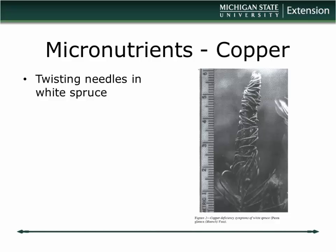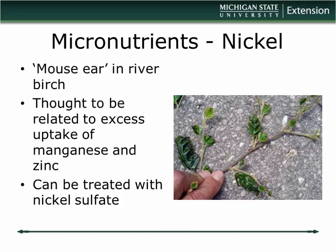Nickel has recently been identified as an essential element — when I was in college there were 16, now there are 17. A deficiency that can occur is in river birch — John Ruter at the University of Georgia did the work on this. He showed that river birch developing mouse ear symptoms — really small, crinkled leaves — can be corrected with application of nickel sulfate. He's done the work and there are now recommendations out there to help alleviate that particular issue.